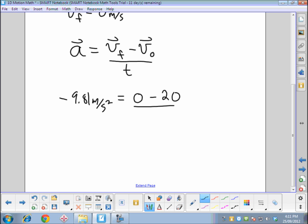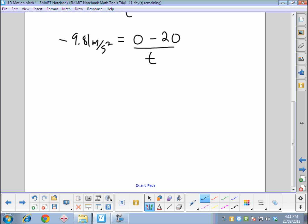Cross-multiply or multiply both sides to get you negative 9.81 multiplied by the time equals negative 20, divide both sides by negative 9.81. And so the resulting time in the air going up is around about 2.0 seconds.